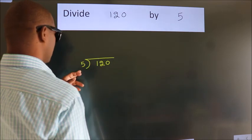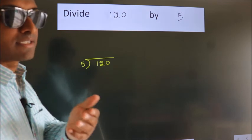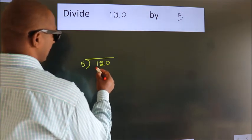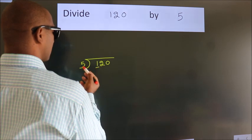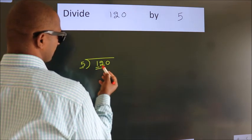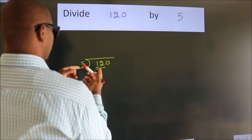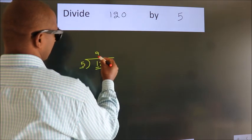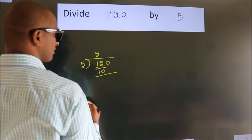Next, here we have 1, here 5. 1 is smaller than 5, so we should take two numbers: 12. A number close to 12 in the 5 table is 5 times 2 equals 10. Now we should subtract, and we get 2.